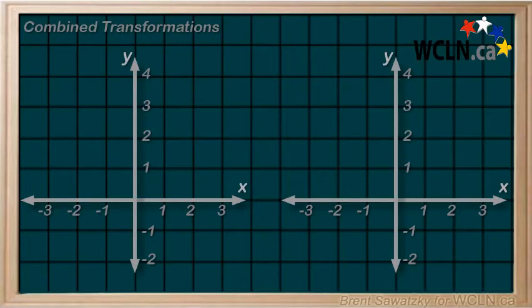At this point, we've learned about quite a number of transformations. So what happens when a relation we're looking at has some combination of these transformations? For example, graph y equals 2x squared plus 1.